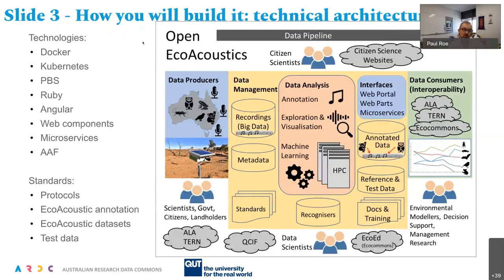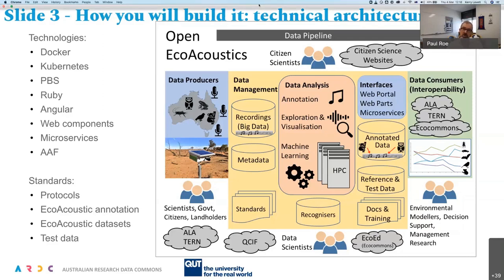In terms of what we're going to do, we've got a list of technologies. Essentially what we're trying to do is improve the existing technologies to make the system easier to maintain and sustainable and accessible with FAIR data. We want to produce reusable services, both microservices and web parts — so if, for example, someone wants to develop a citizen science website involving eco-acoustic data, they can just bring in web parts that do annotation and analysis. We need to interoperate, talking to ALA and TERN. And there's a need for standards, since there aren't currently a lot of standards around eco-acoustics. We need to develop them and build on existing standards and the expertise of ARDC, ALA and others.